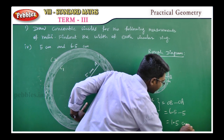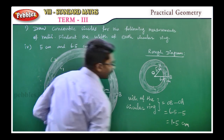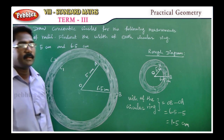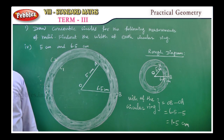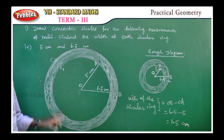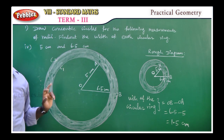The width of the circular ring is straightforward because the measurements are 5cm and 6.5cm for the inner and outer radii.